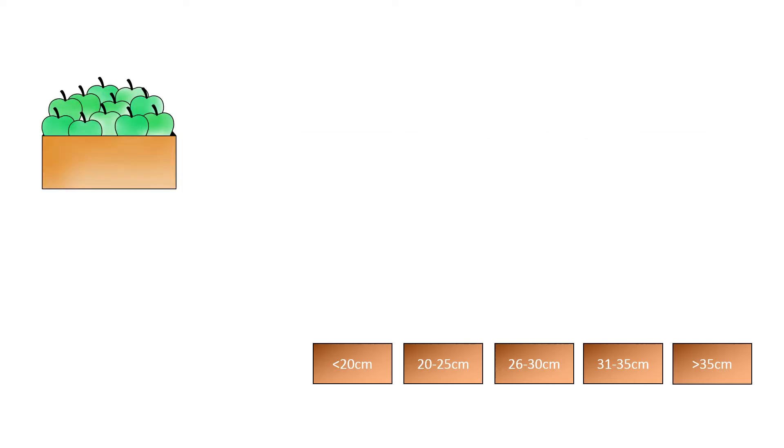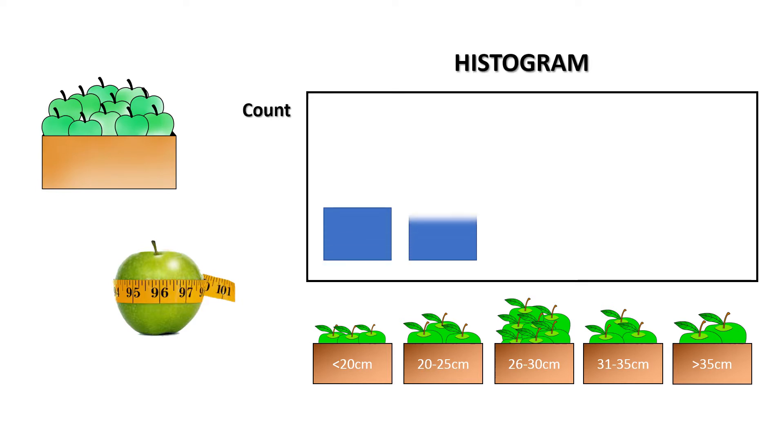For example, if you measure the size of each apple in a box, plot all the sizes into a histogram, it will look like this. This is the shape that people refer to as a bell curve - it looks like a bell.